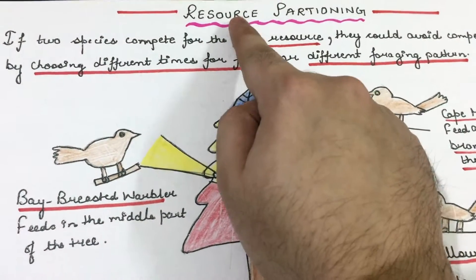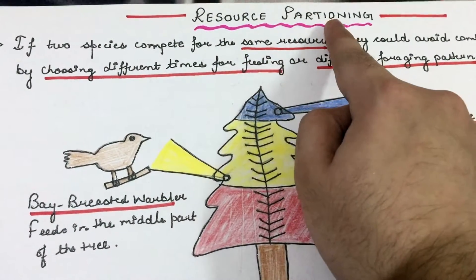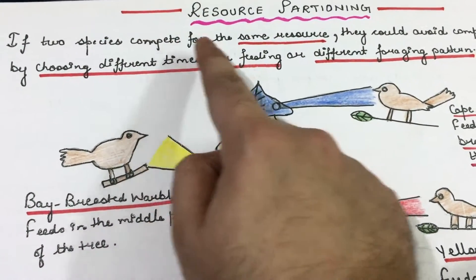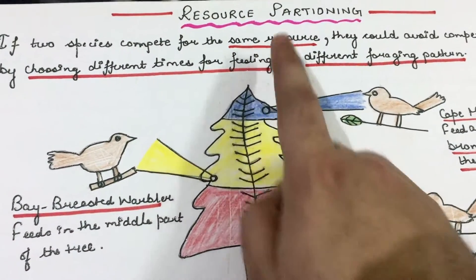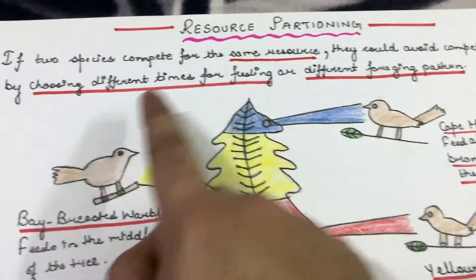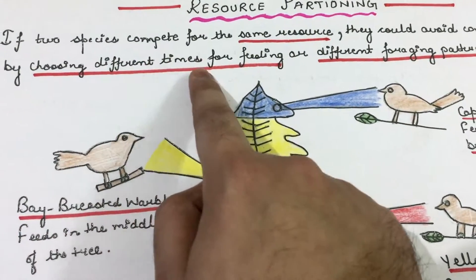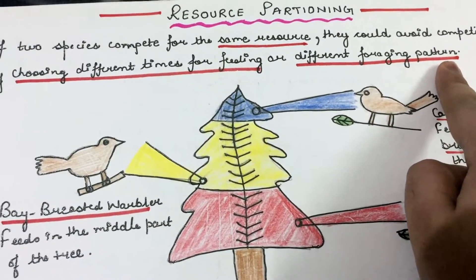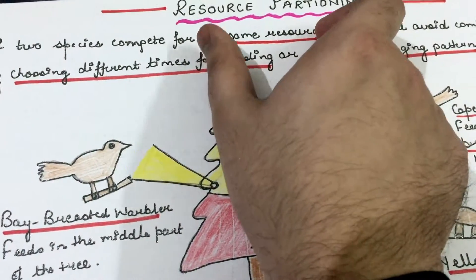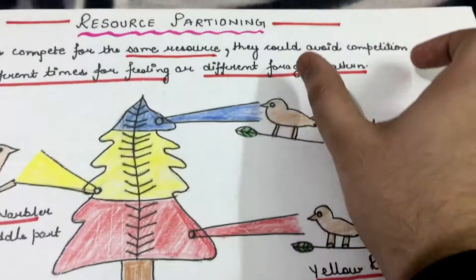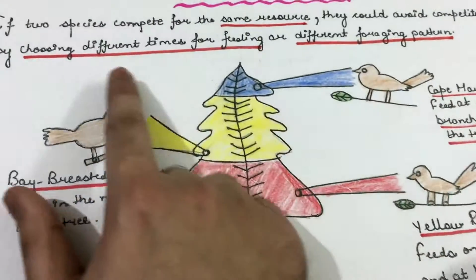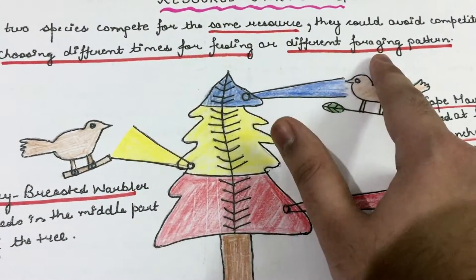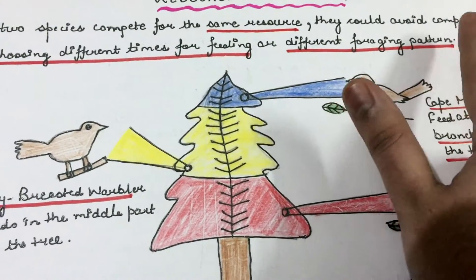Now let us understand what is resource partitioning. If two species compete for the same resource, they could avoid competition by choosing different times for feeding or different foraging patterns. Foraging means the search for food.